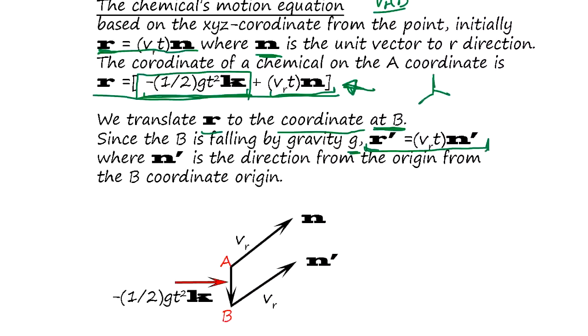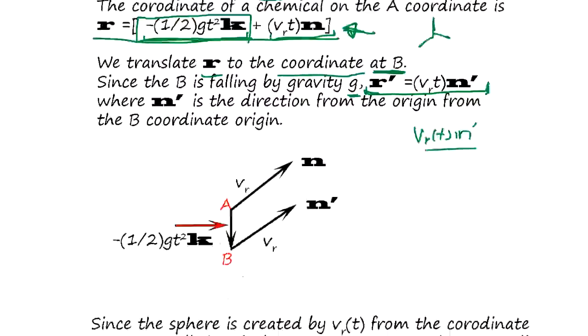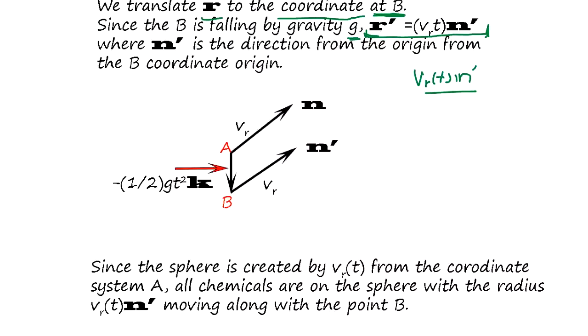Then the new distance from the coordinate B becomes Br(t) or Br*t times the radiating vector. So it's going to be again the same sphere. So this becomes sphere and this also maintains sphere.